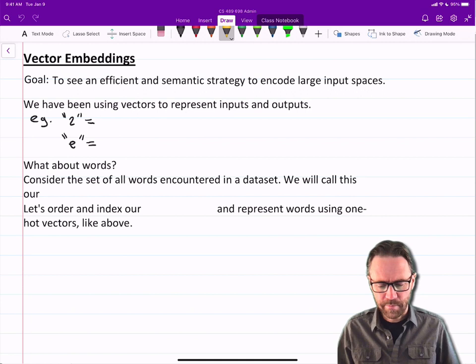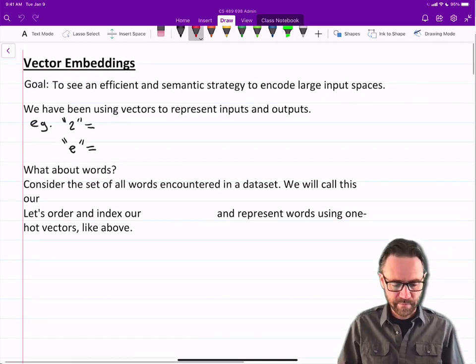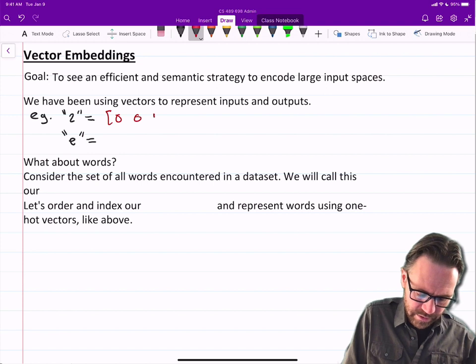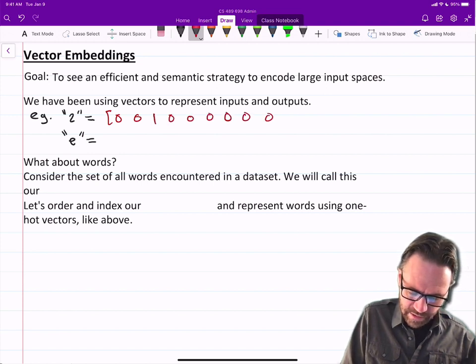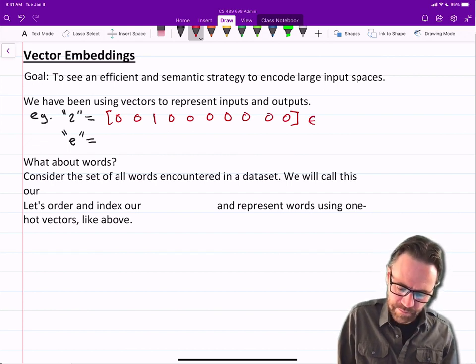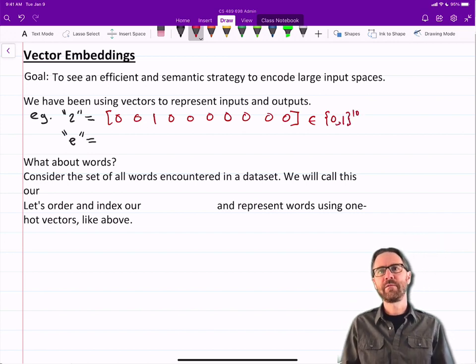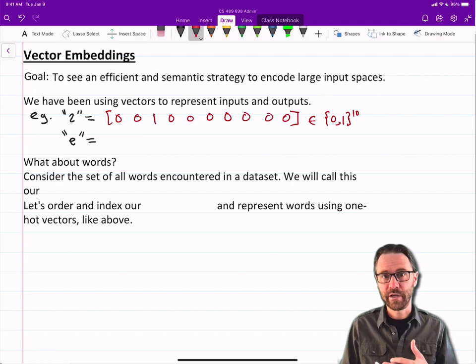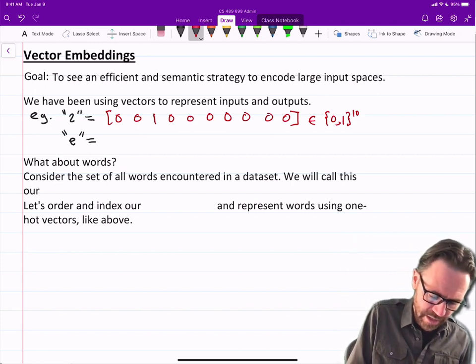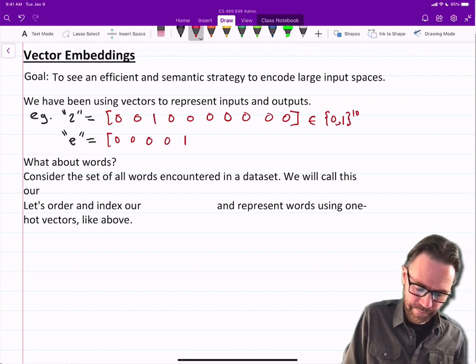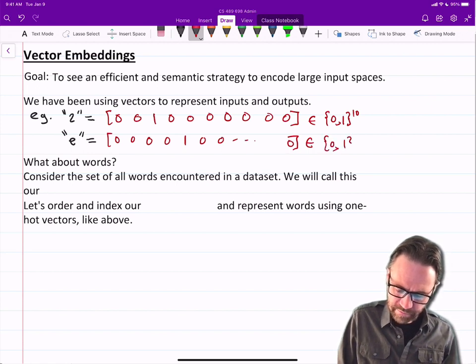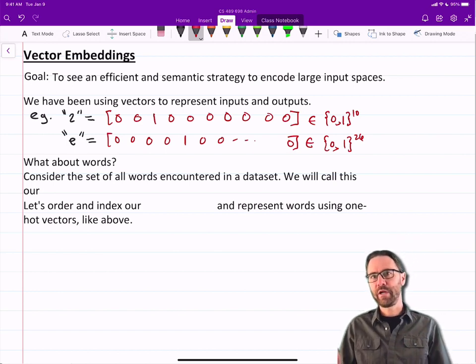We've been using vectors to represent inputs and outputs so far. For example, when we're dealing with MNIST we'll have a 2, represented as a one-hot vector: 0, 1, 2, 3, 4, 5, 6, 7, 8, 9. So a 1 in the 2 space, basically taken from the set of binary strings of length 10. We could do the same thing with letters which we actually did with the Origin of Species. E would be A, B, C, D, E, F, G and so on. Those would be taken from binary strings of length 26 or 27 or 28 depending on how many characters we have.